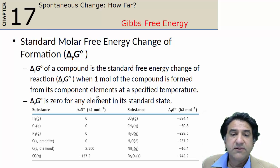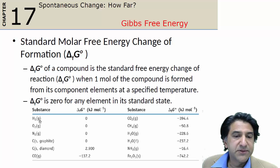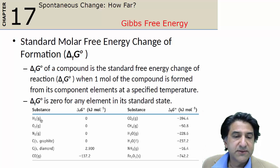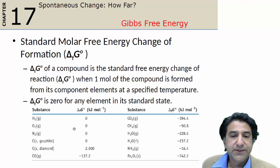So for that, we know that the free energy of formation of an element is going to be zero in its standard state. For hydrogen gas, H₂, in its standard state, delta G of formation — assuming it's a gas at the particular temperature — is zero. Likewise, oxygen and nitrogen.